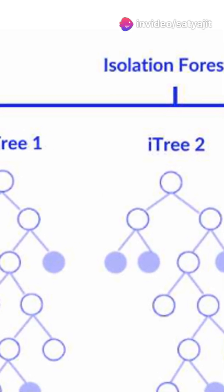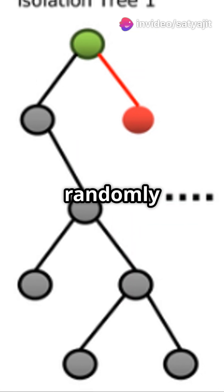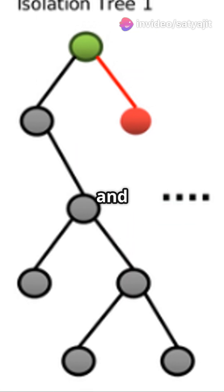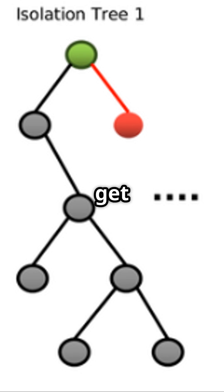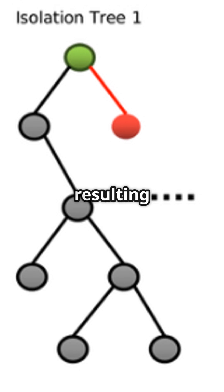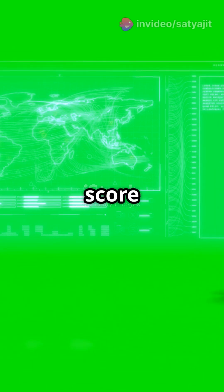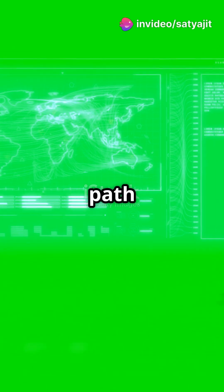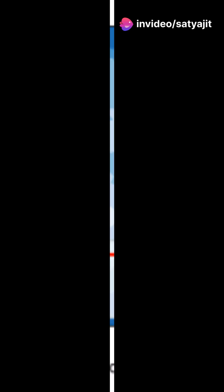So how does it work? It builds an ensemble of isolation trees, or ITrees, by randomly selecting features and split values. Anomalies, being rare and different, get isolated faster, resulting in shorter path lengths in these trees. It then calculates an anomaly score based on the average path length. The shorter the path, the higher the score, the more likely it's an anomaly.